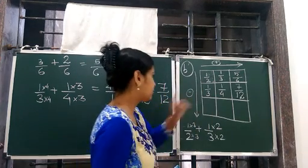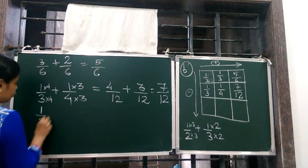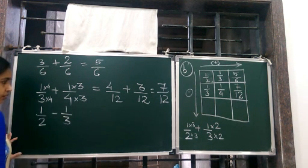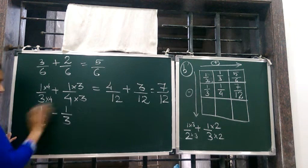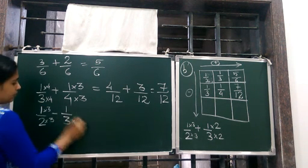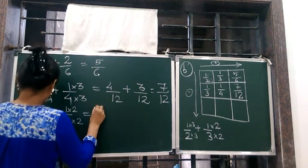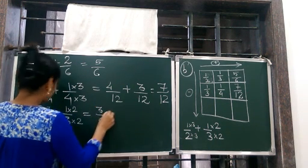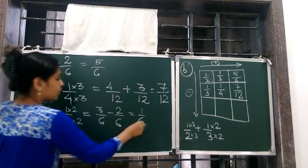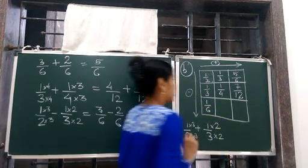Now we will subtract. So 1 by 2 minus 1 by 3. Again we will interchange and multiply — 3 multiplies here and 2 multiplies here to make the denominators same. So this comes out to be 3 by 6 minus 2 by 6, which gives us 1 by 6. So we write here 1 by 6.